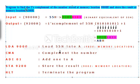Here is the program to find the 2's complement of the number stored at memory location 9000h and store the result at memory location 9200h. I am taking input as 55h from 9000h location which is equal to 01010101 in binary.